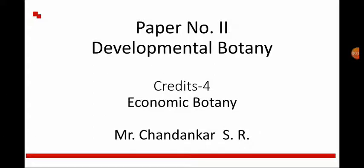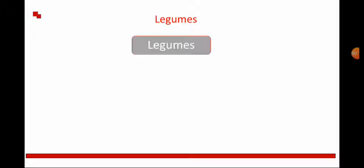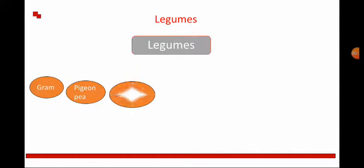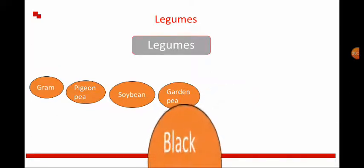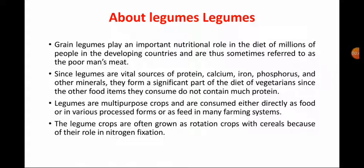Good afternoon. In today's lecture of developmental botany, we will see the legumes and nuts. In today's lecture we are discussing about legumes. Here different legumes are cultivated in our region: Gram, Pigeon Pea, Soybean, Garden Pea, Black Gram, Moth Bean, and the last one is Cow Pea.